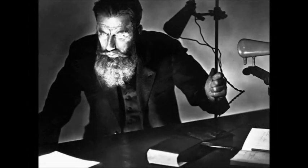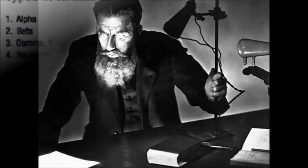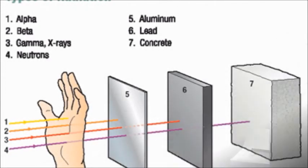Wilhelm Conrad Röntgen was born on the 27th of March 1845 and died on the 10th of February 1923. He was a German physicist who, on the 8th of November 1895, produced and detected electromagnetic radiation in a wavelength range today known as X-rays, or Röntgen rays — an achievement that earned him the first Nobel Prize in Physics in 1901.